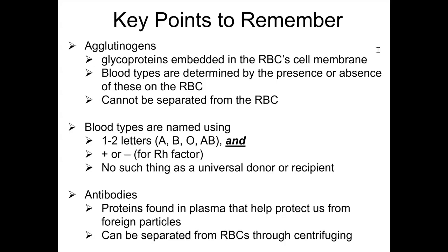Agglutinogens, sometimes called antigens, are glycoproteins that are embedded in the cell's membrane, that of the red blood cell. The presence or absence of those agglutinogens determine what the blood type is.